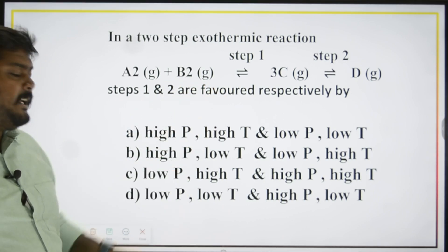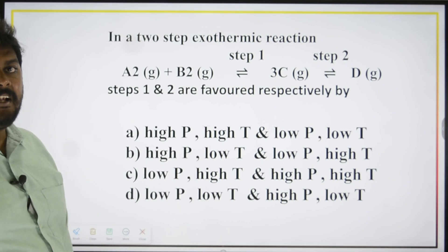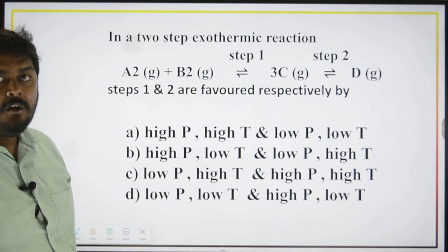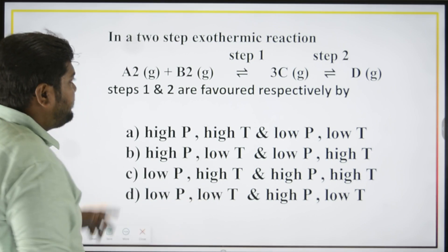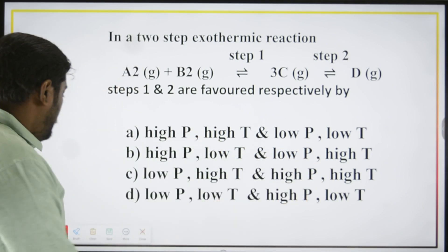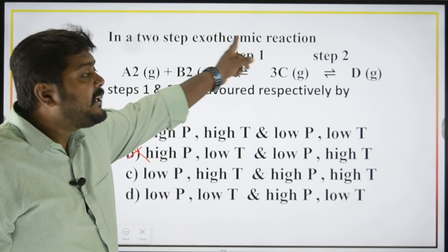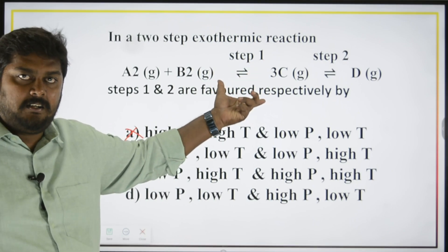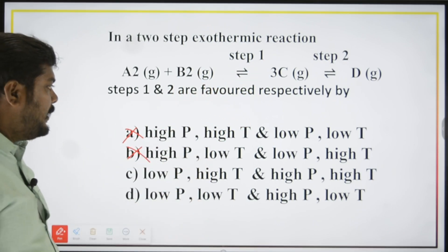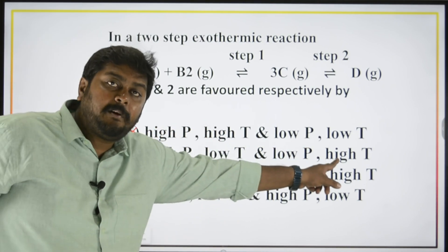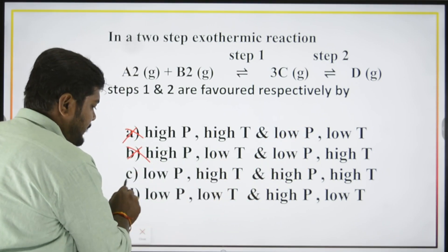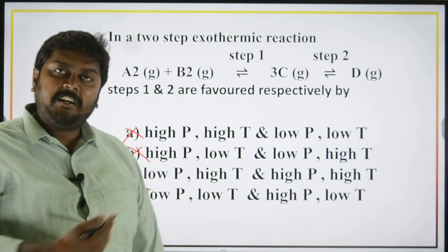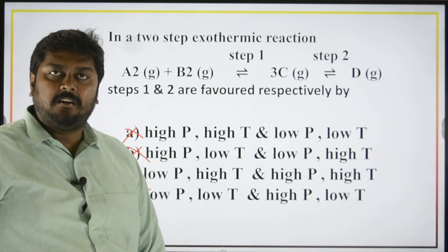Again, consider this equation — in a two-step exothermic reaction: A₂ + B₂ gives 3C, and 3C again reacts to give product. Both steps are exothermic, so del H is negative, meaning low temperature is favoured. High temperature options are neglected. Options with high temperature are eliminated. For option D, you check with pressure — just ignore temperature and apply pressure logic to find the answer.